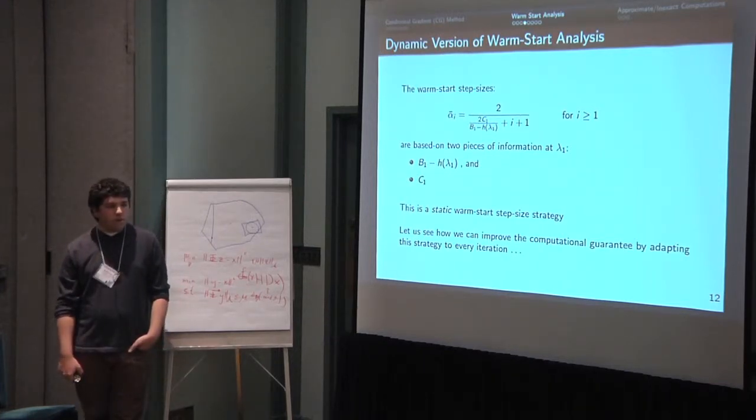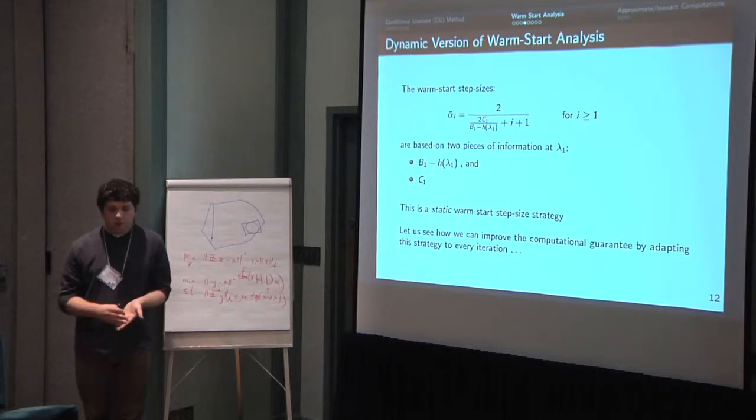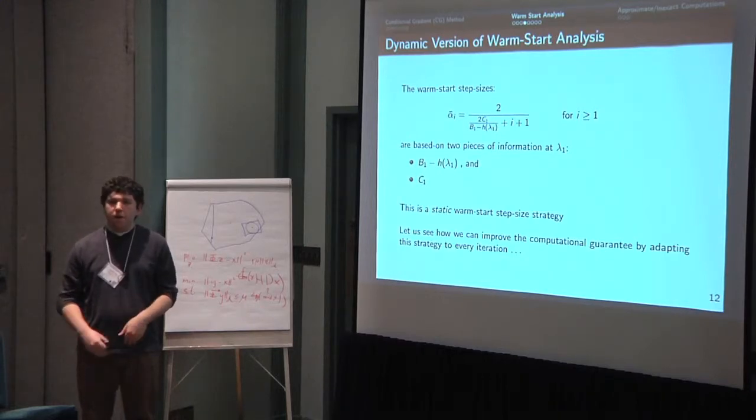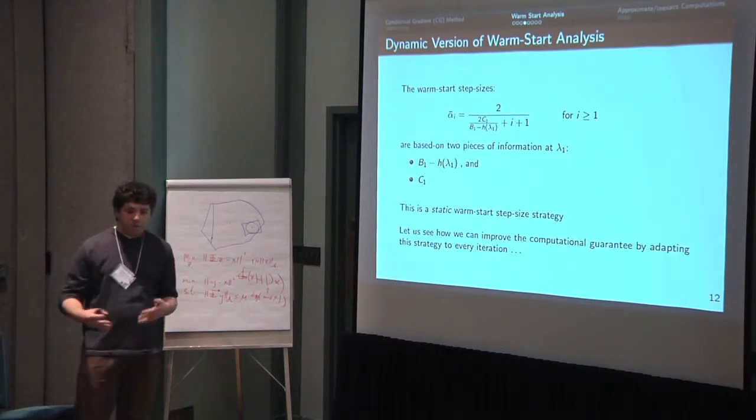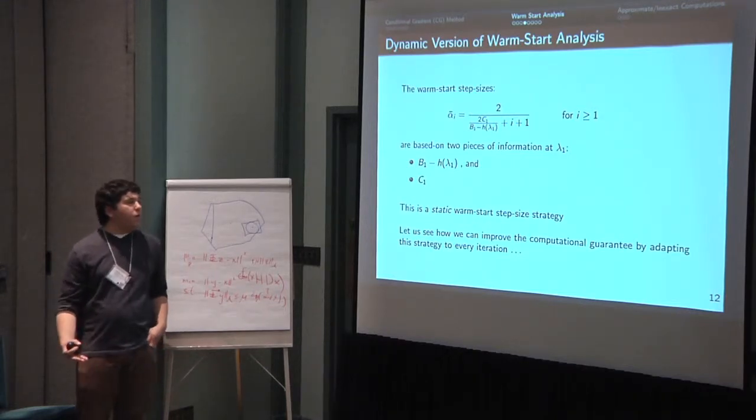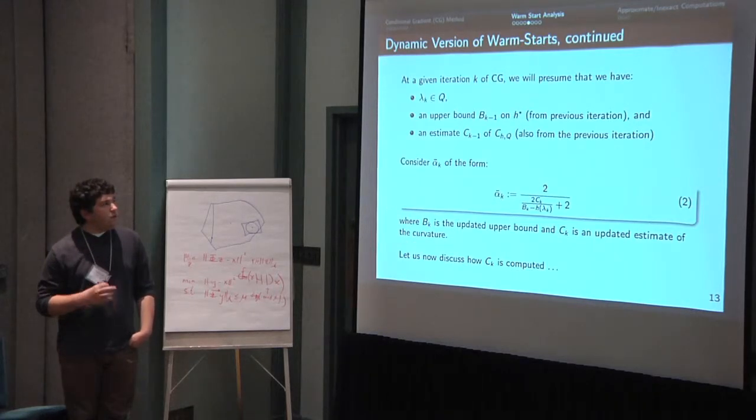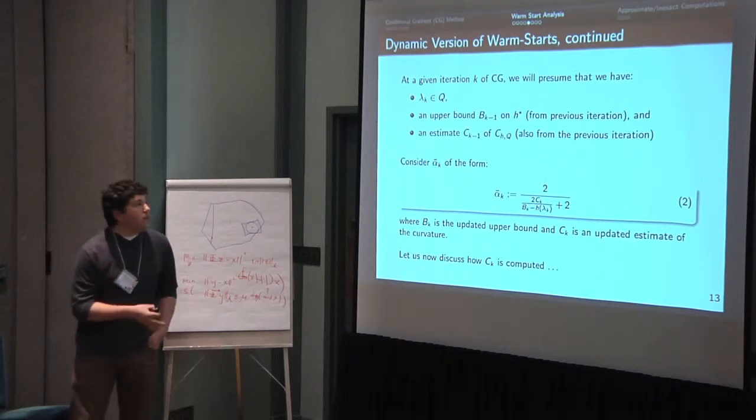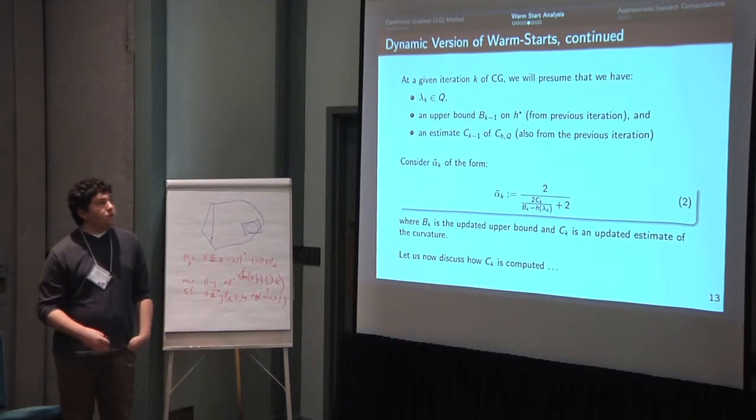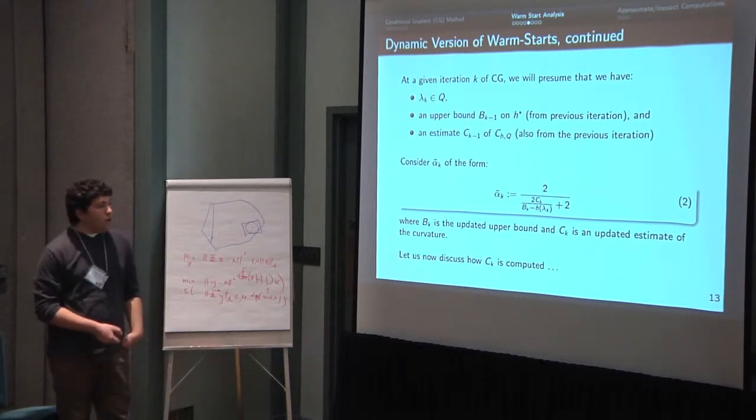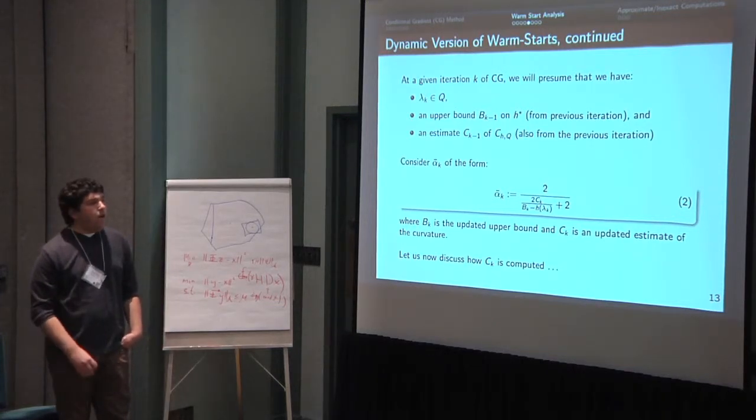So now let's talk about actually, this warm start kind of step size has the idea that you start at a good point but then you continue on with the 2 over i plus 2. But maybe actually as you're running you do better and better and you're kind of throwing away information by continuing with the 2 over i plus 2 step size. So how do we adapt this in a dynamic way? So the way to do that, if we consider an iteration of the algorithm, we're at some point lambda k, we've got an upper bound b k minus 1 from the previous iteration and an estimate of the curvature from the previous iteration. And what we want to do is we want to do a step size that looks like 2 over this ratio that we saw before now updated with the new upper bound b k and some new estimate c k plus 2. And so this is like the first step in the 2 over i plus 2 step size.